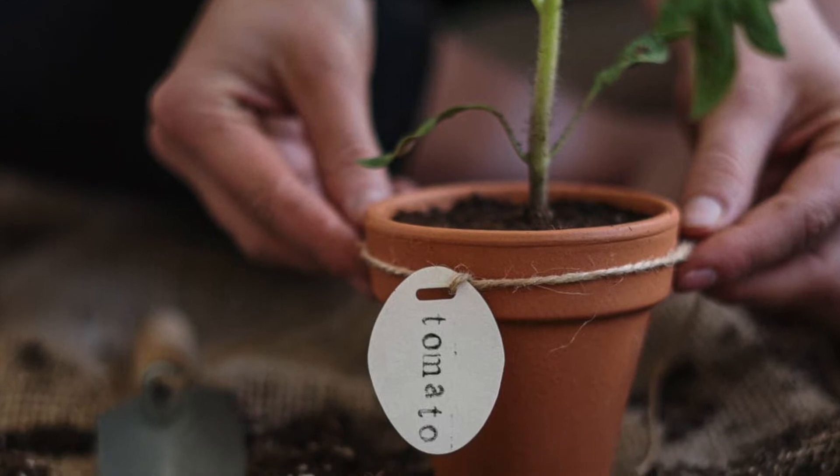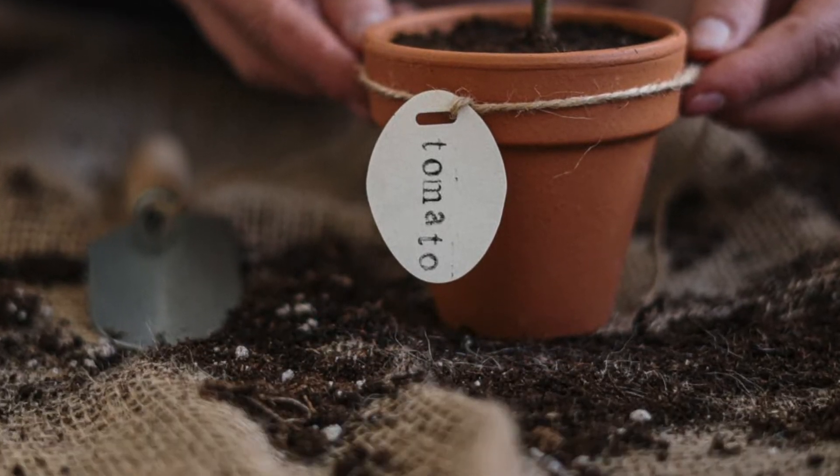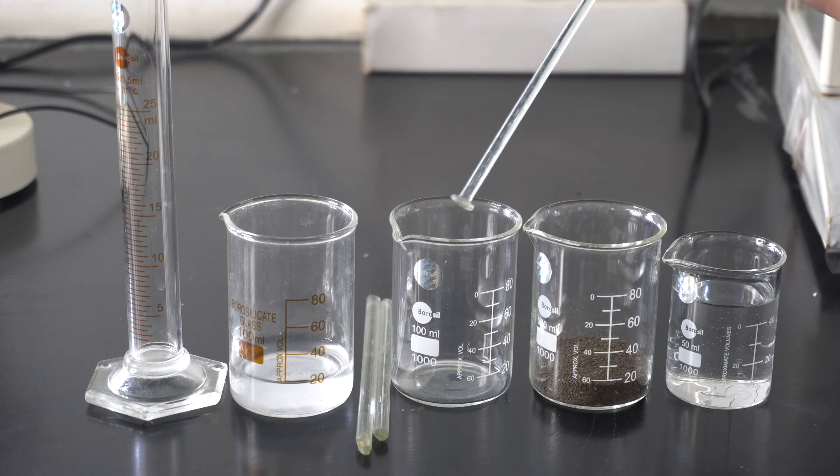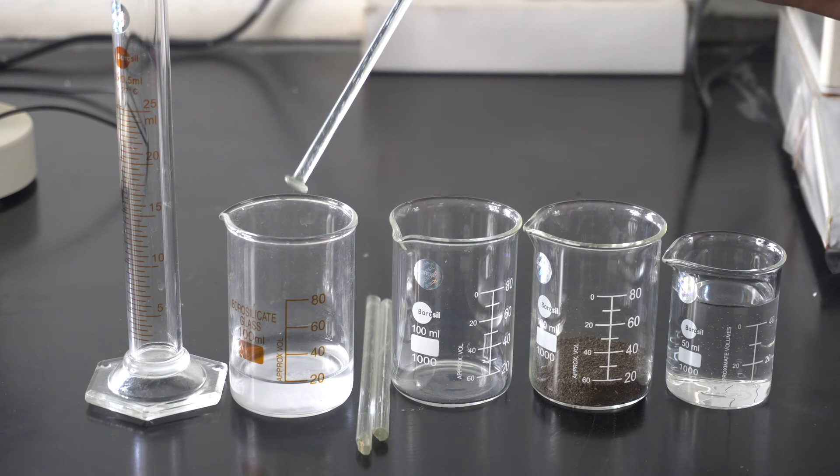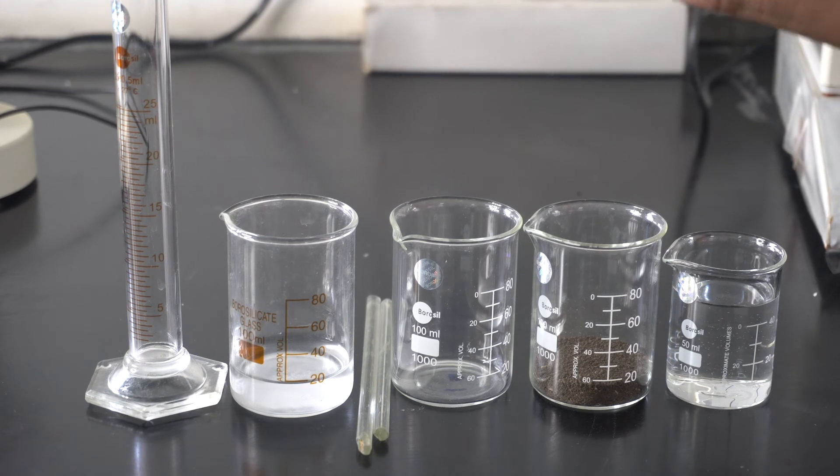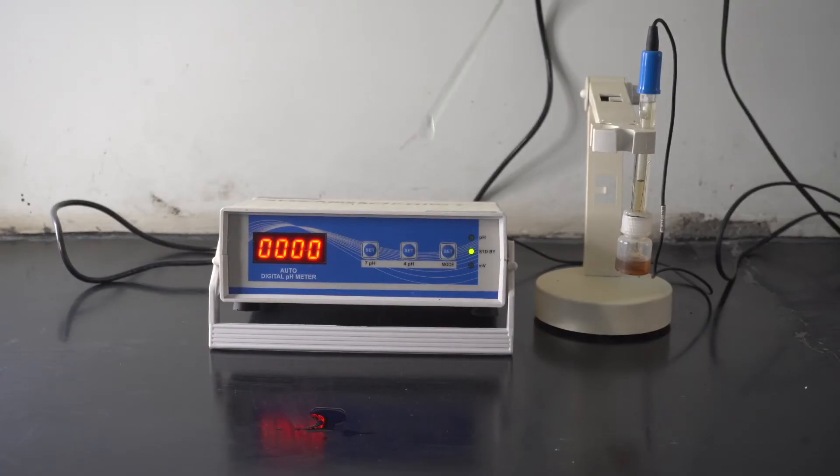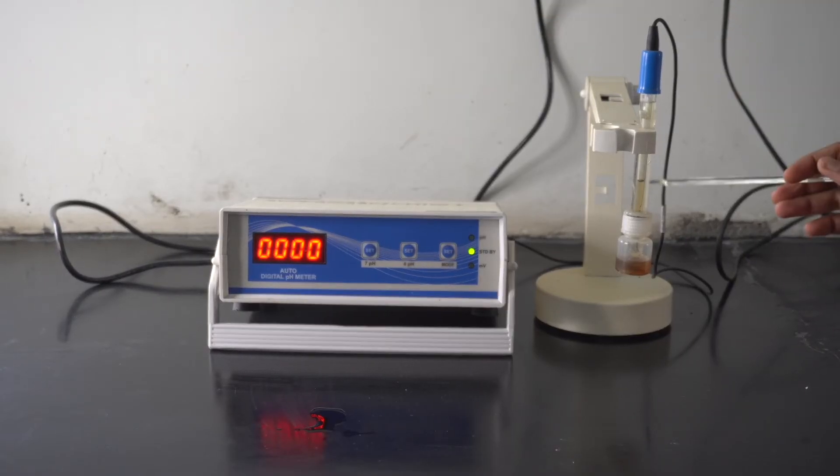To get started we will need distilled water, 20 grams of soil, a beaker, glass rods, buffer solution, a measuring cylinder, a standard pH meter, and a pH electrode.